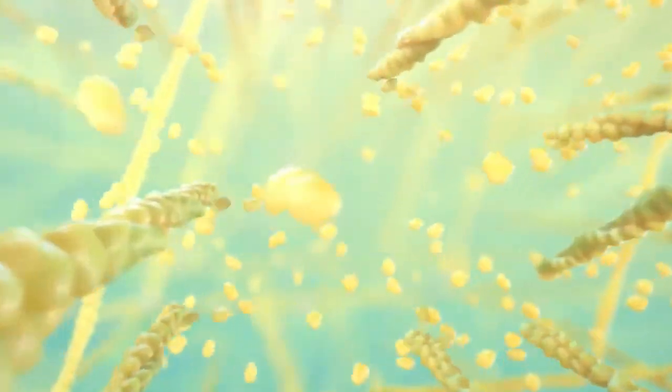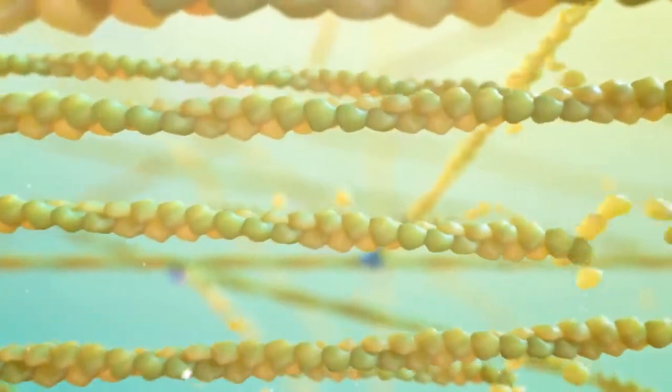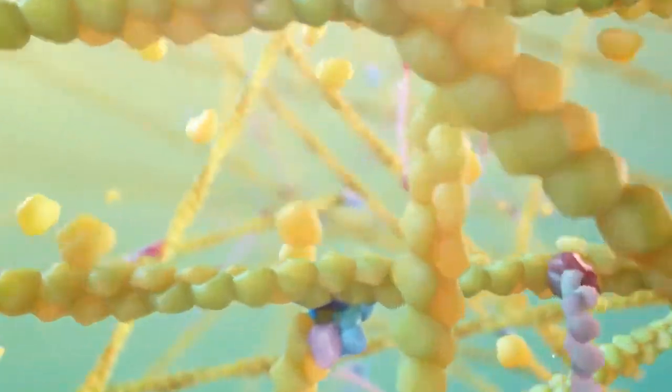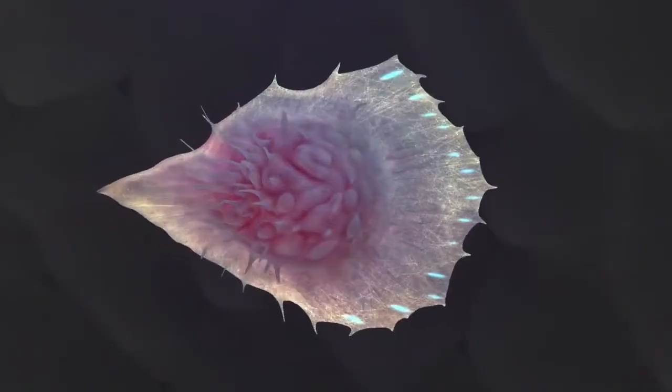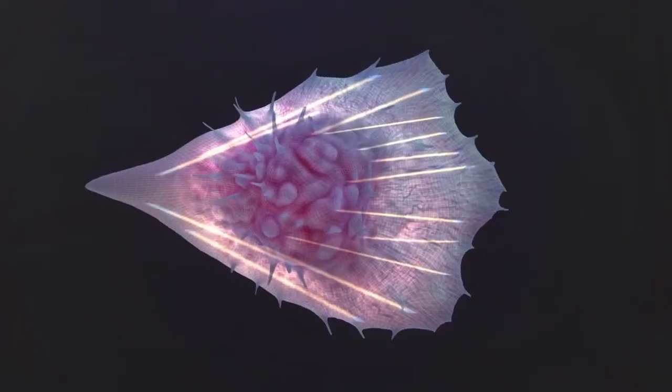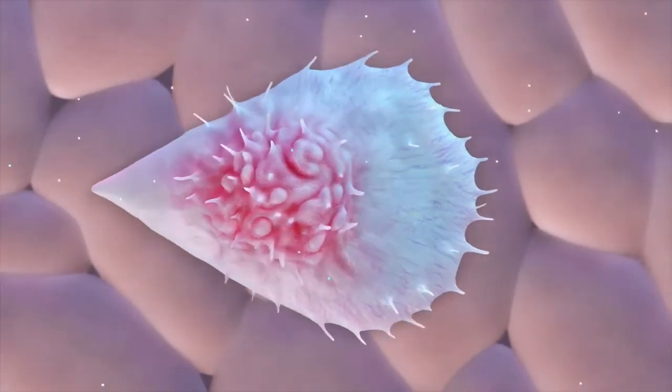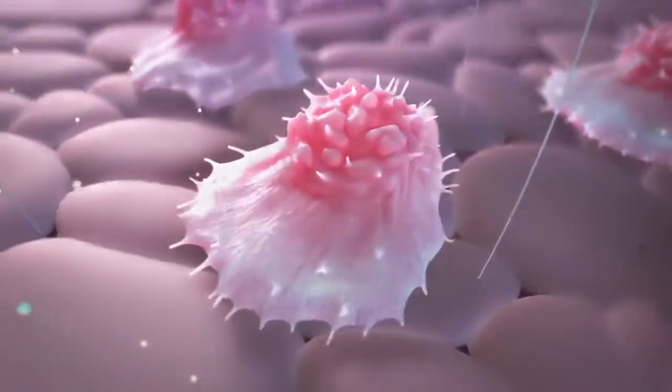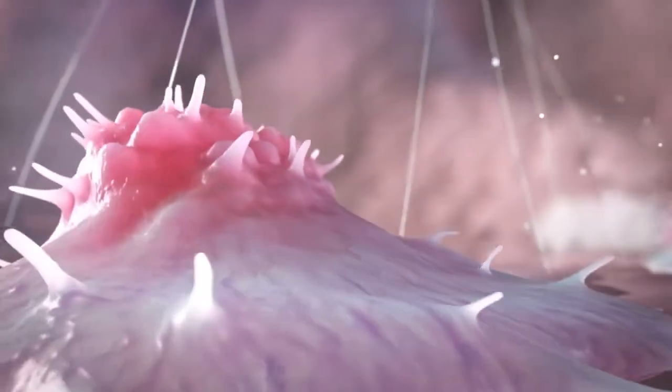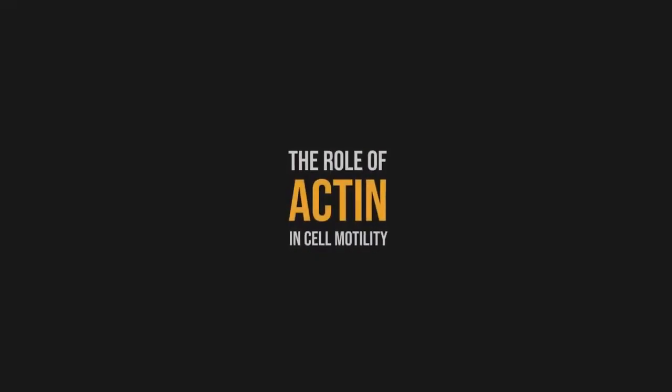These dynamic changes in the actin cytoskeleton occur in a fraction of a second and work in concert to facilitate the continuous cycles of cell protrusion, adhesion, and contraction. This enables cell motility, ultimately allowing lymphocytes to perform their duty of immune surveillance and defense.